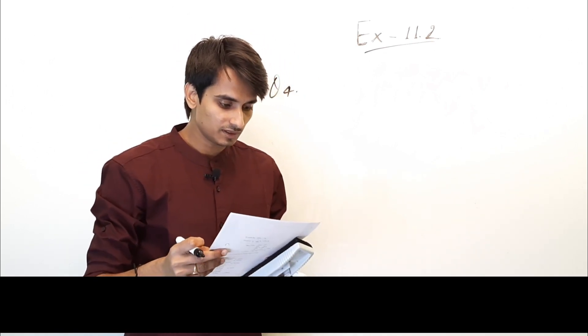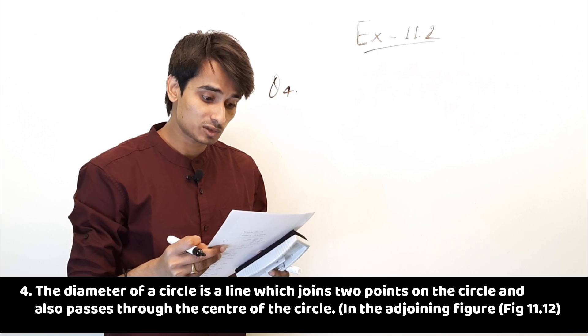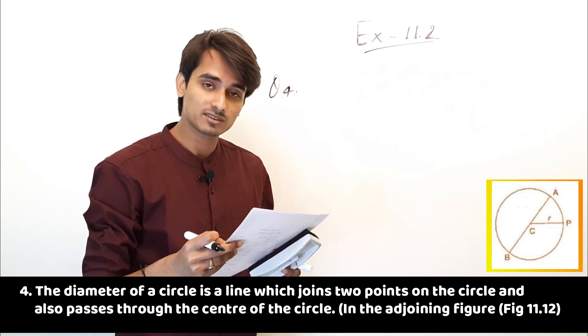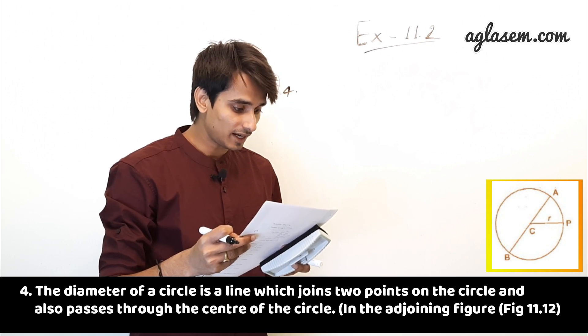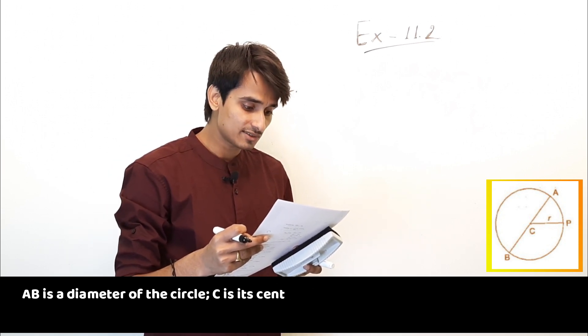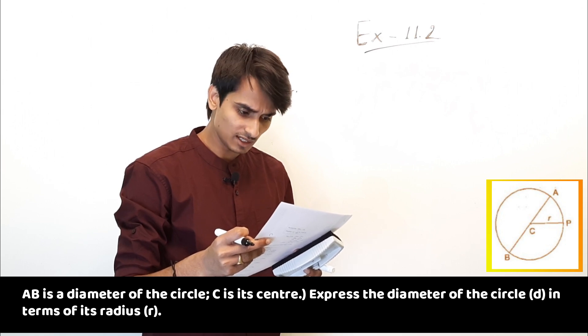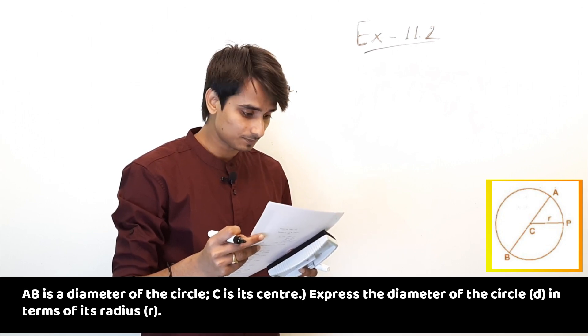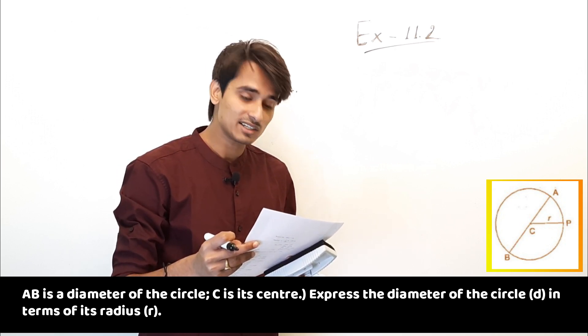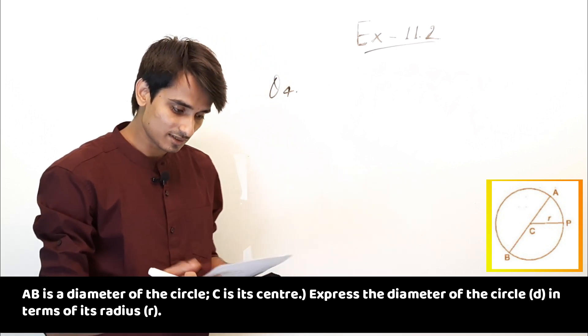Moving to the next question. The diameter of a circle is a line which joins two points on the circle and also passes through the center of the circle. In the adjoining Figure 11.12, AB is a diameter of the circle. C is its center. Express the diameter of the circle D in terms of its radius R.